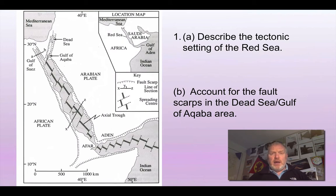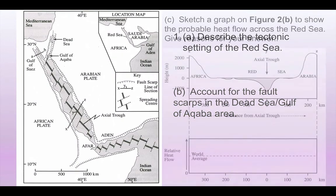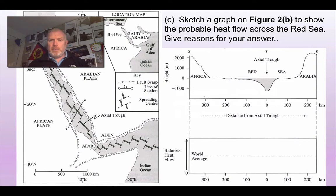Rather than me telling you all about it, I've set you a series of questions. What is the tectonic setting here for the Red Sea? You'll see there's a whole series of fault scarps in this area — why are they there? Think about things we've learned earlier in the course. We also have a cross-section that goes from X to Y to Z as marked on the map, going from Africa through to Arabia across the Red Sea. I'd like you to sketch a graph of what the heat flow at the surface would be like across these areas, giving reasons and annotating your graph.